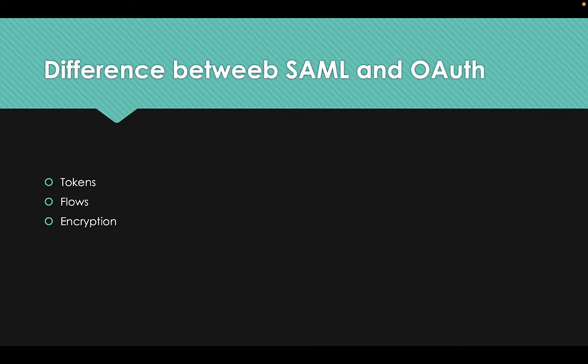The main differences between SAML and OAuth are tokens, flows, and encryption. When to use SAML versus OAuth: it is generally a good choice to use SAML for enterprise applications, and generally good to use OAuth for mobile deployments. You can also use SAML and OAuth together, because SAML can both authenticate and authorize, while OAuth can only authorize users.